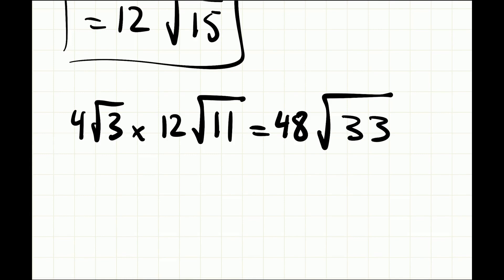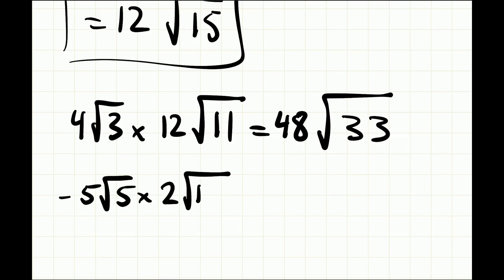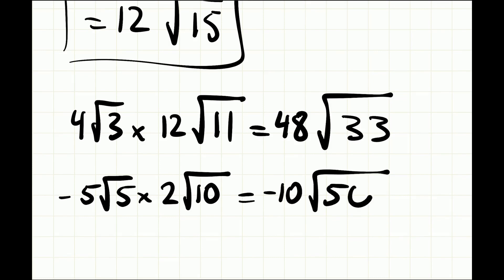Let's look at another example. Let's say we have -5√5 and we are multiplying that by 2√10. We know that -5 times 2 is -10, and we know that 5 multiplied by 10 is going to give us 50, so we have -10√50.